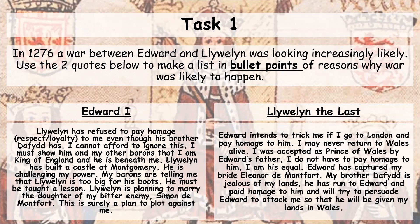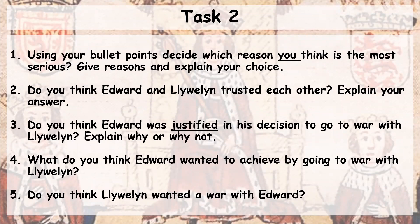You should be back from making your bullet points now. For the second task, using your bullet points, decide which reason you think is the most serious and most likely to cause a war between the two — give reasons and explain why. Secondly, do you think Edward and Llewellyn trusted each other? Thirdly, do you think Edward was justified in his decision to go to war — did he have a reason, and was it right? Fourthly, what do you think Edward wanted to achieve by going to war? And fifth, do you think Llewellyn wanted a war, or did he have no choice? Pause the video and complete that task on the worksheets, in your books, or on paper.